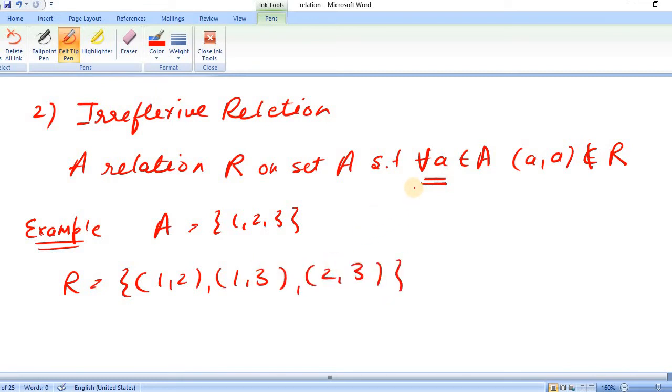What is the definition of Irreflexive Relation? That for all A, (A,A) should not be in R. This is 1, so (1,1) should not be there. This is 2, so (2,2) should also not be there. This is 3, so (3,3) should also not be in R.